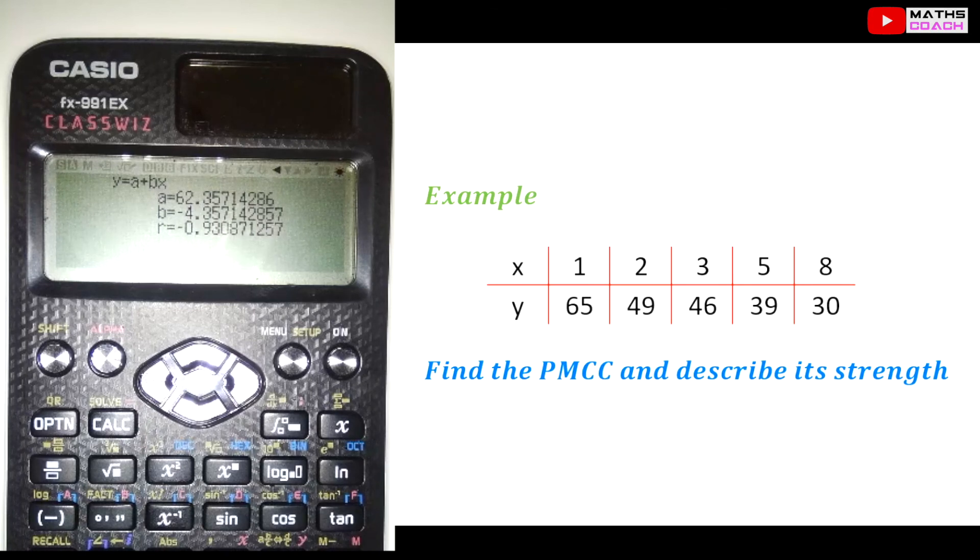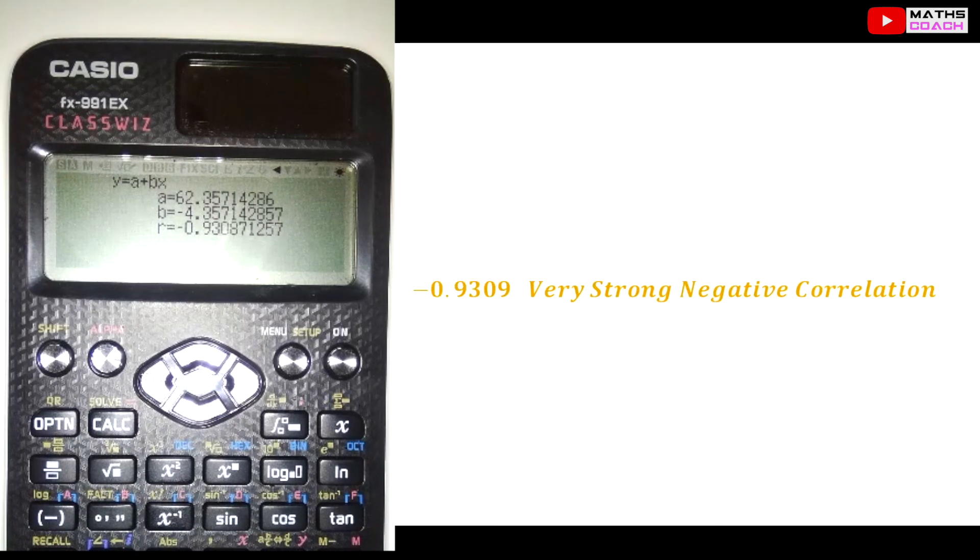And that's telling us it's fairly strong, very strong in fact. So we have an r value of negative 0.9309. And that would tell us if we had to draw a scatter graph, we'll get a very strong negative correlation.